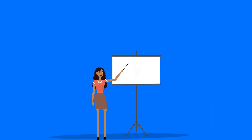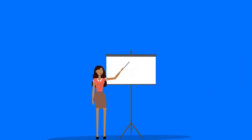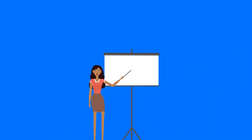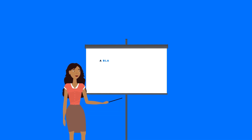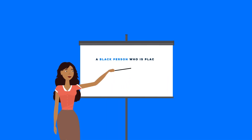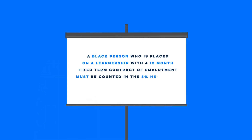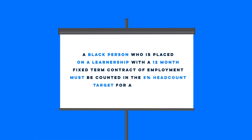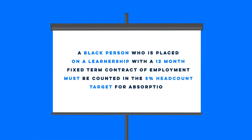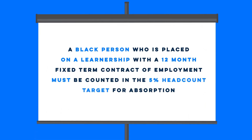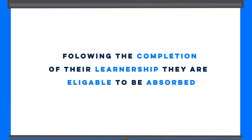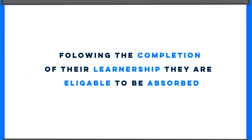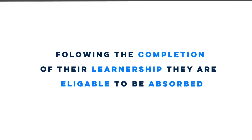There are a few points that you might want to consider. Firstly, a black person who is placed on a learnership with a 12-month fixed-term contract of employment must be counted in the 5% headcount target for absorption. Following the completion of their learnership, they are eligible to be absorbed.